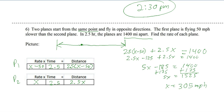And so we should get an x of 305 miles per hour, and that's for plane 2. So plane 2 is traveling at 305 miles per hour. And then plane 1 is traveling at 50 miles per hour slower, so 255 miles per hour.